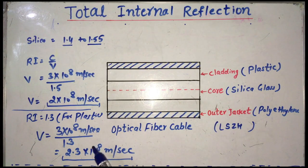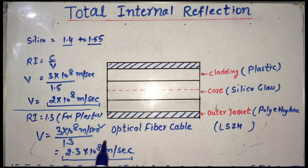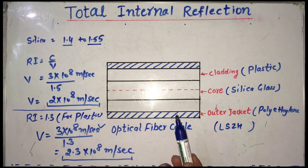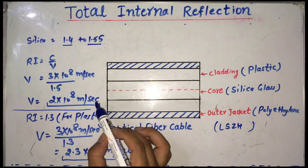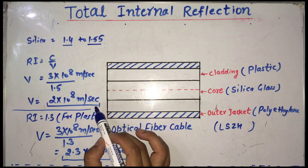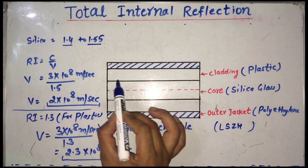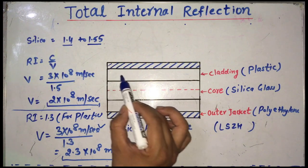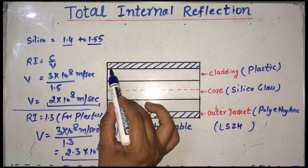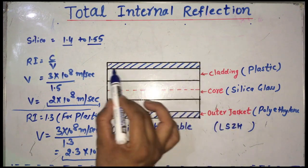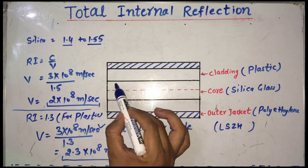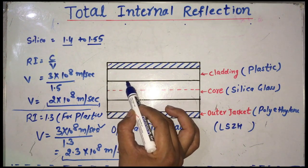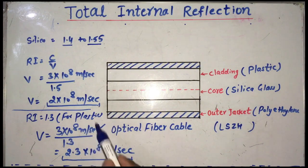In both cases, the speed of light is slower than the speed of light in vacuum. This concept tells us how fast light will travel from one medium to another. When light falls upon the optical fiber cable, at the boundary where the inner side is silica glass and the outer layer is plastic, when light tries to cross this boundary, the speed of light will change.